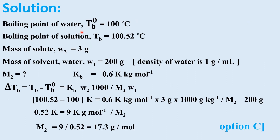Boiling point of water T0b = 100°C, boiling point of solution Tb = 100.52°C. Mass of solute W2 = 3 gram. Mass of solvent W1 = 200 gram (since density of water is 1 g/mL, 200 mL = 200 g). Molar mass of solute M2 is to be found. Kb = 0.6 Kelvin·kg per mole.